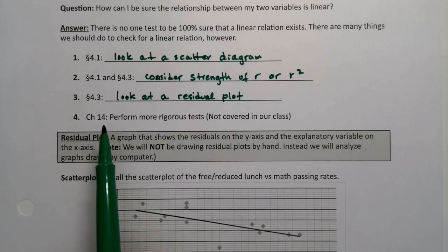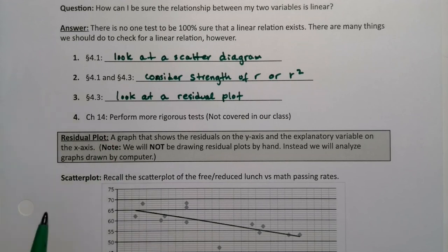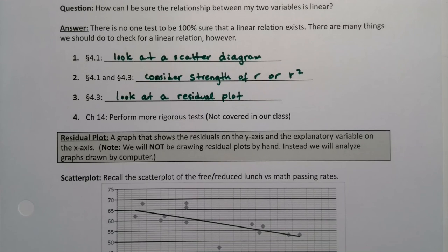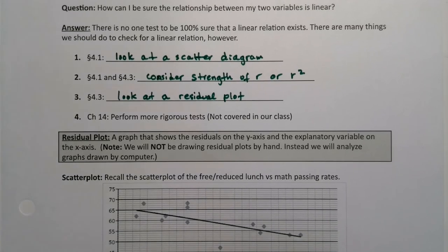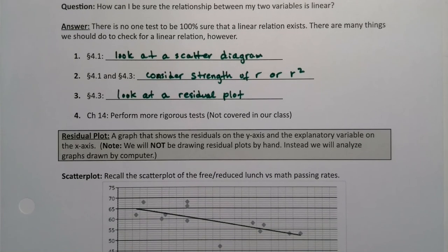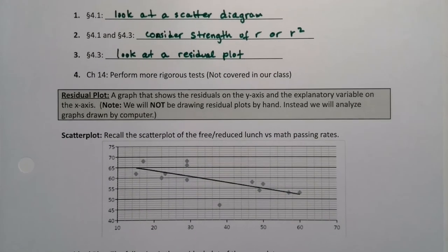Now if you kept going, in chapter 14, there are more rigorous tests, but we're not going to cover them in this class. They're hypothesis tests on a regression line, if you're interested. You can read about them, but I would recommend after you've done chapter 10, and maybe 11, so you know what you're doing.